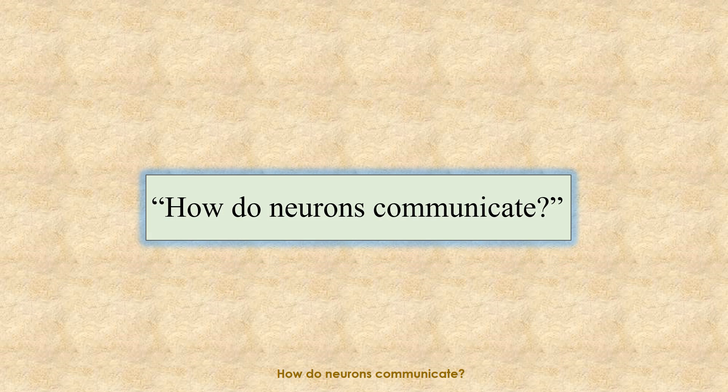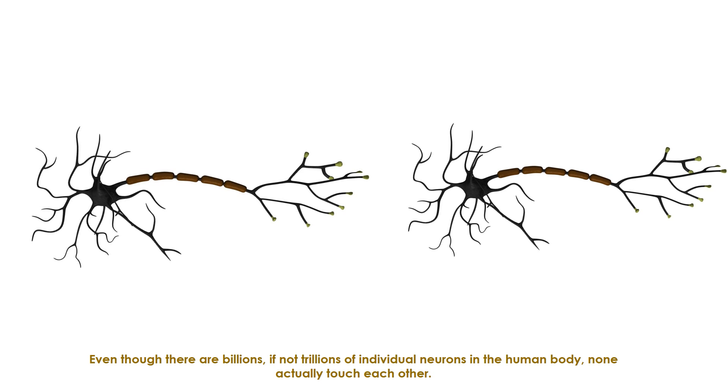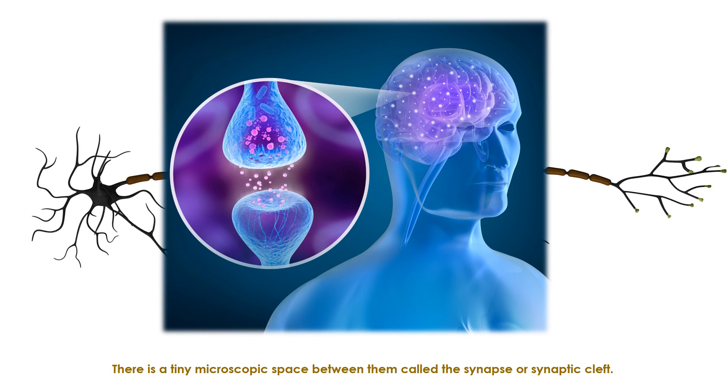How do neurons communicate? Even though there are billions, if not trillions of individual neurons in the human body, none actually touch each other. There is a tiny microscopic space between them called the synapse or synaptic cleft.